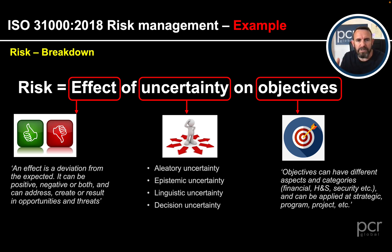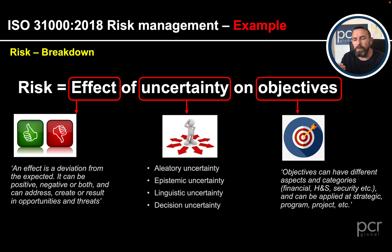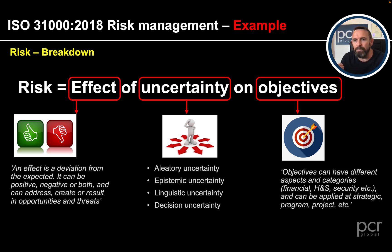So we have: risk is the effect of uncertainty on objectives. We've looked at objectives, the effect, and uncertainty. Linguistic uncertainty is very common in conversation - someone might say 'he's old.' What does old mean? There's uncertainty within that. The way we speak often introduces uncertainty, so I always ask for clarification: who, what, when, where, how - dig a little deeper.